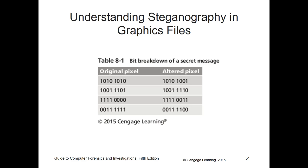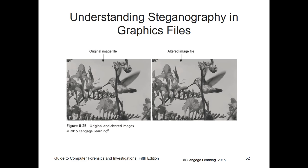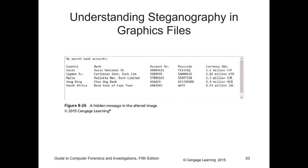Steganography programs installed on a suspect's drive are also a good clue. Here is a bit breakdown of the original pixels versus the edited pixels — the first six pixels are identical, but the seventh and eighth pixels are flipped. The two images look nearly identical, so do keep that in mind.